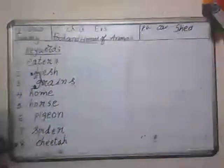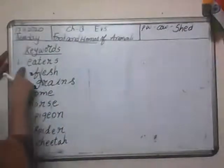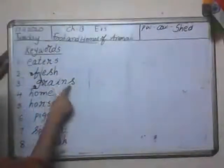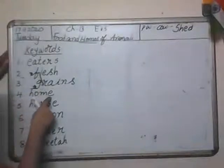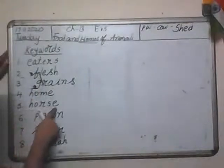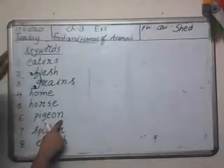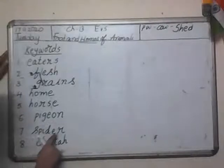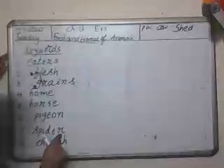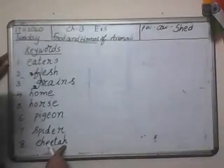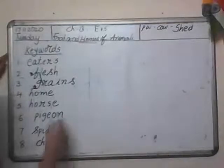So this is the list of 8 keywords: eaters E-A-T-E-R-S, flesh F-L-E-S-H, grains G-R-A-I-N-S, home H-O-M-E, horse H-O-R-S-E, pigeon P-I-G-E-O-N, spider S-P-I-D-E-R — spider is an insect which has eight legs — and cheetah C-H-E-E-T-A-H. Cheetah is a flesh eater and the fastest land animal.